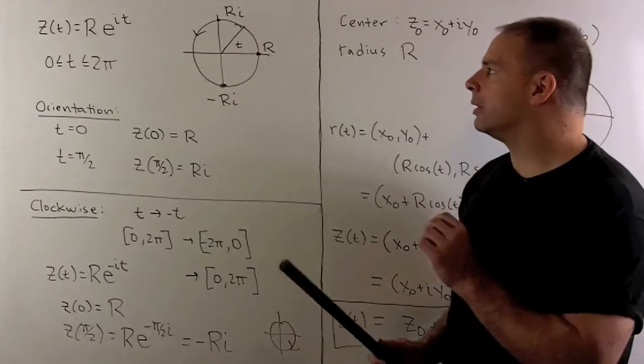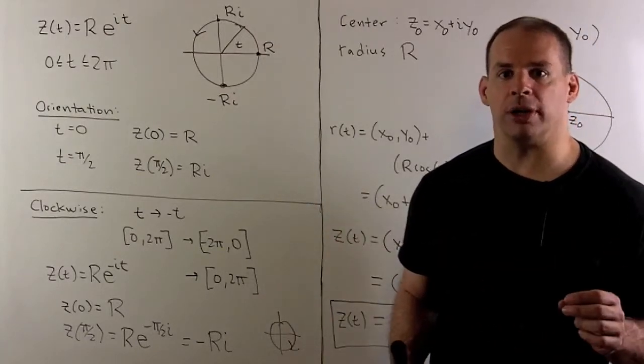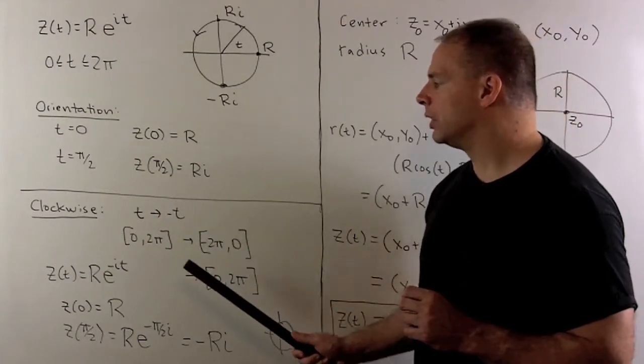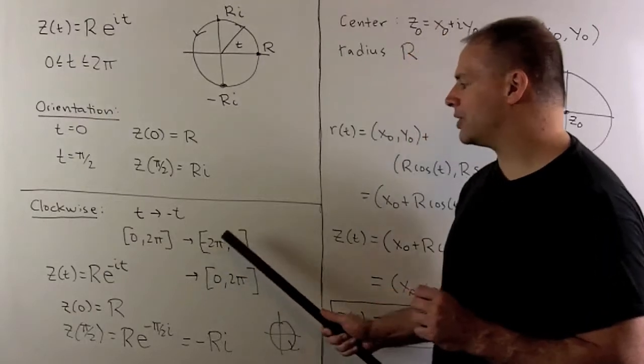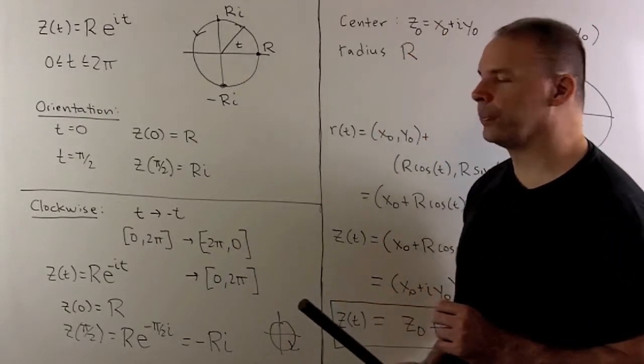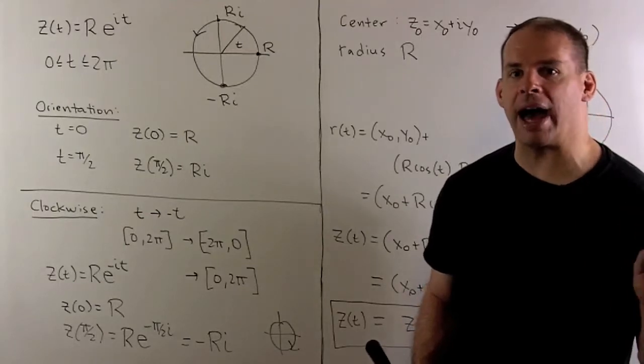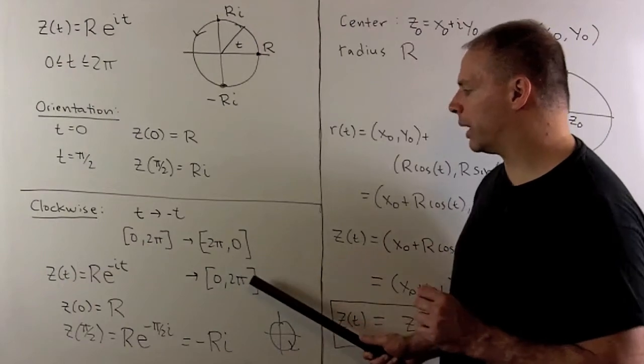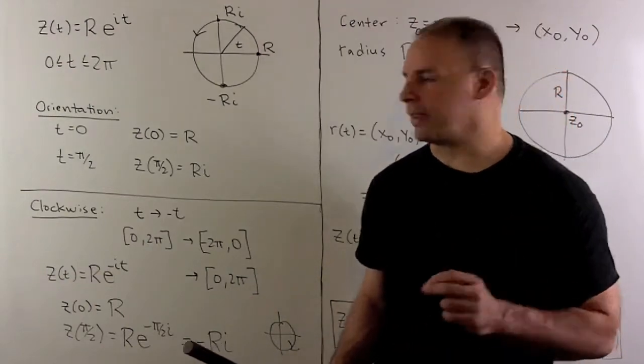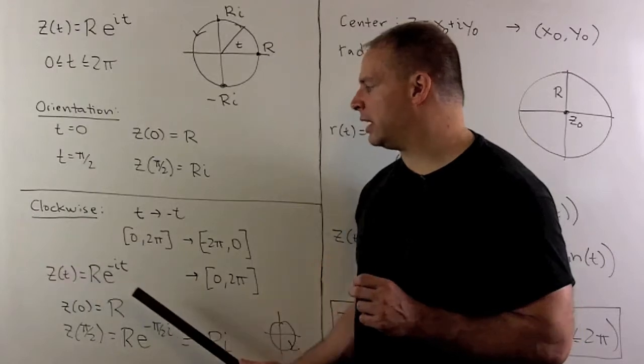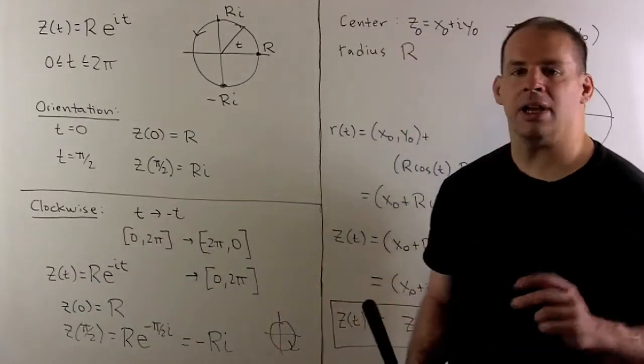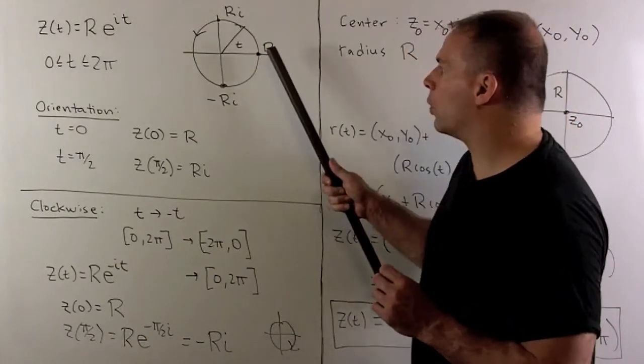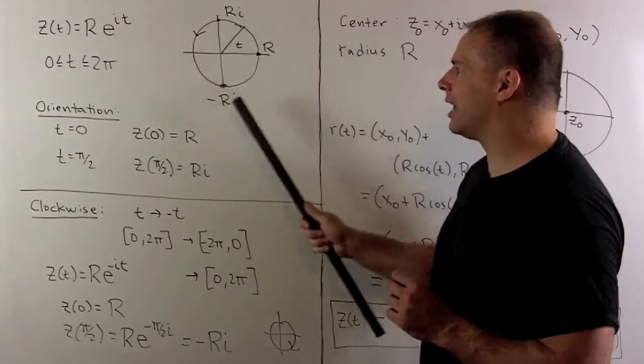What about the circle oriented in the clockwise direction? Our recipe says, I just send t to minus t, change our interval from 0 to 2pi to minus 2 pi to 0. Because our circle repeats every 2 pi, we can add 2 pi to each point here to get back our interval 0 to 2 pi. The new formula that we use, z of t equals R e to the minus it. If I check at our point 0 and pi halves, we get R and minus Ri. So you can see now we're moving in the clockwise direction.